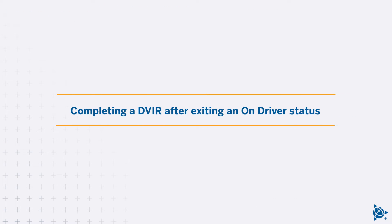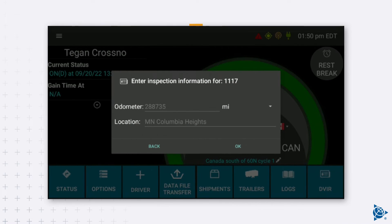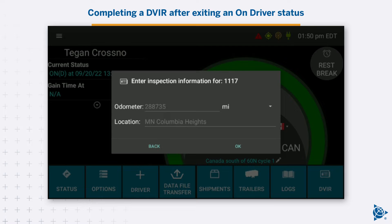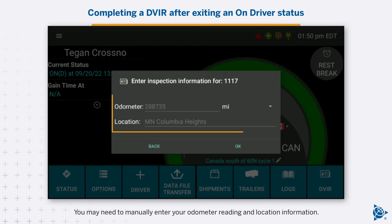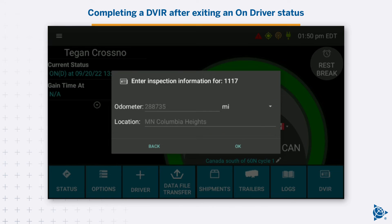Completing a DVIR after exiting an on-driver status: The Enter Inspection Information window opens. You may need to manually enter your odometer reading and location information. Tap OK.